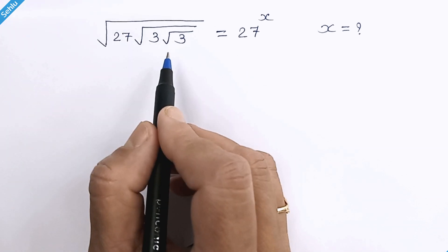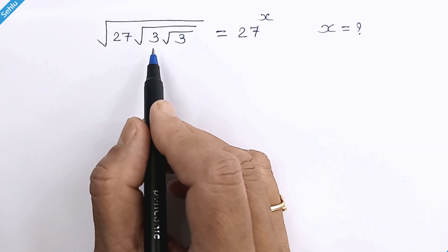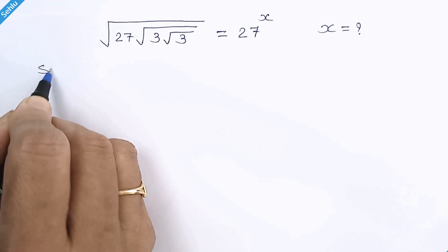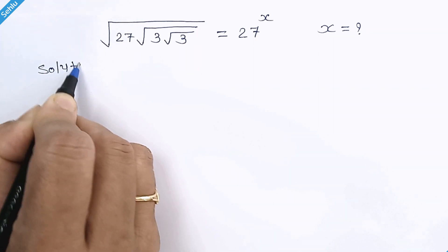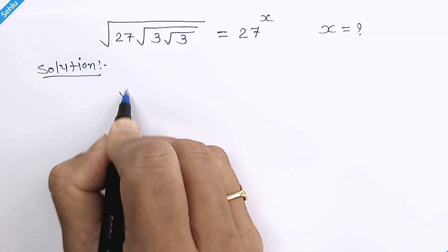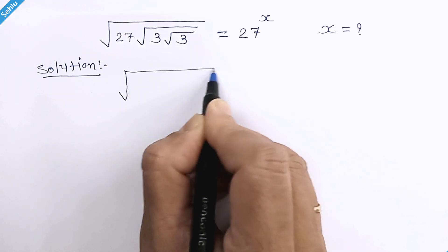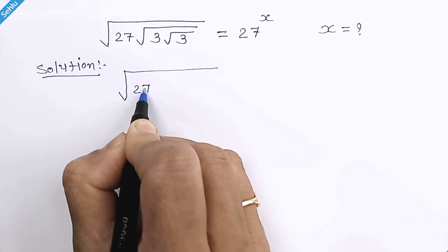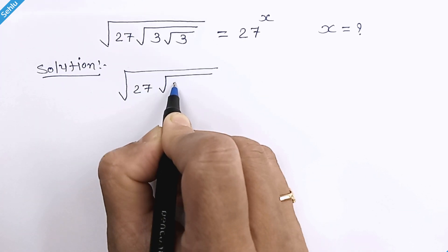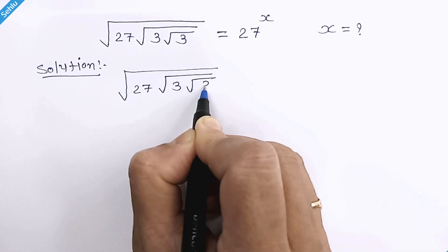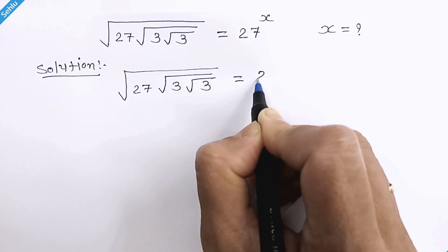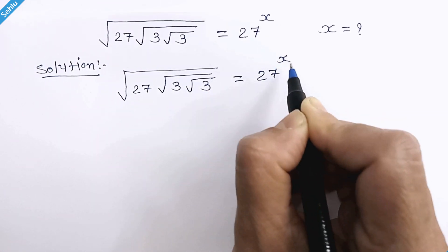Hello friends, it's a nice square root problem we have. Let's solve this. Our question is: square root of 27 times square root of 3 times square root of 3 is equal to 27 raised to x.